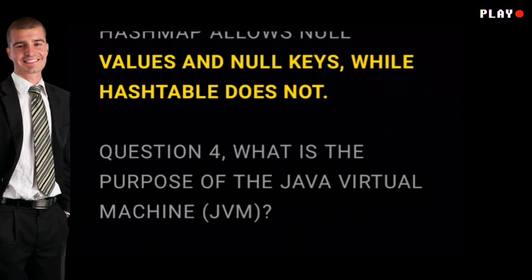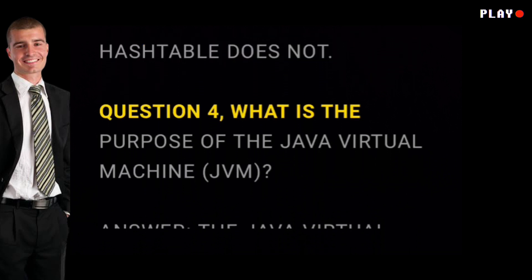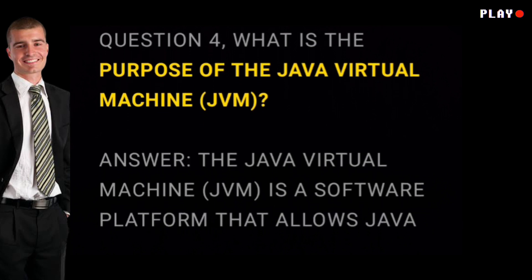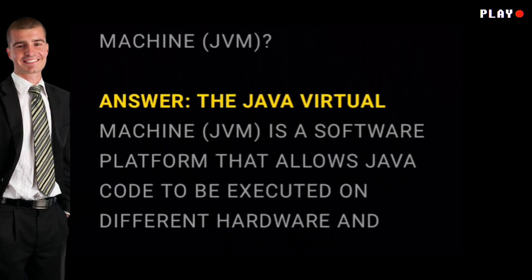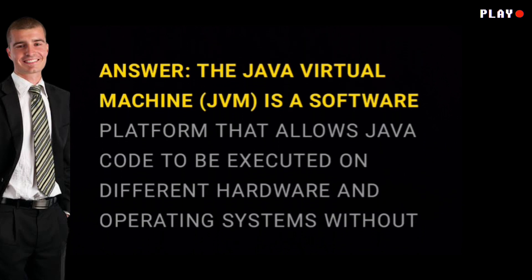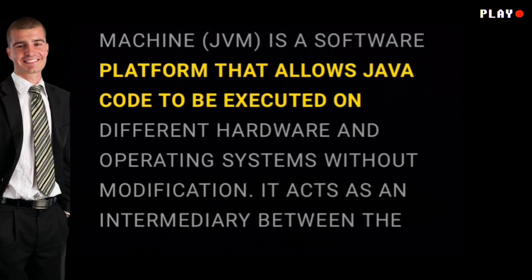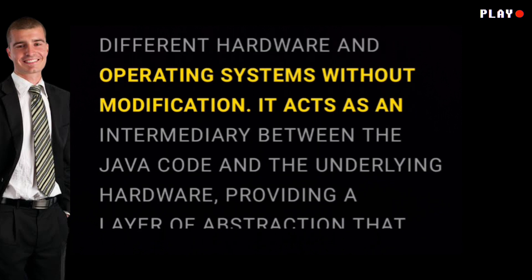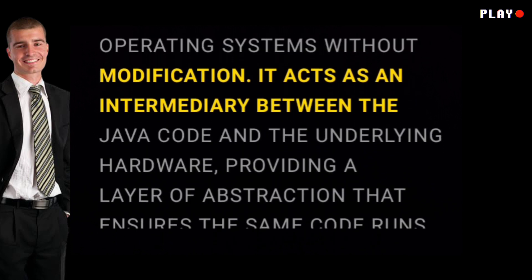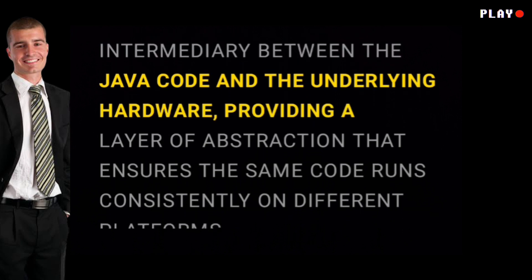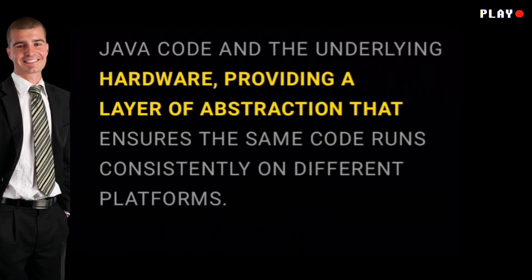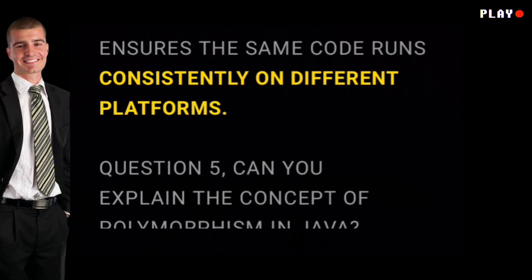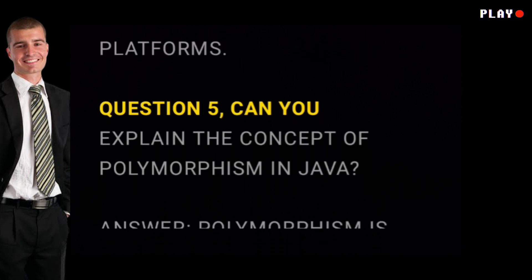Question four: what is the purpose of the Java Virtual Machine (JVM)? Answer: the Java Virtual Machine, JVM, is a software platform that allows Java code to be executed on different hardware and operating systems without modification. It acts as an intermediary between the Java code and the underlying hardware, providing a layer of abstraction that ensures the same code runs consistently on different platforms.